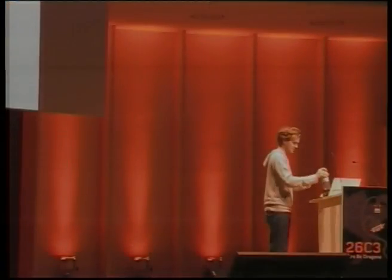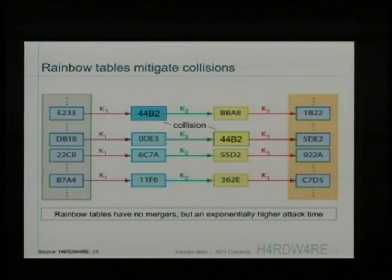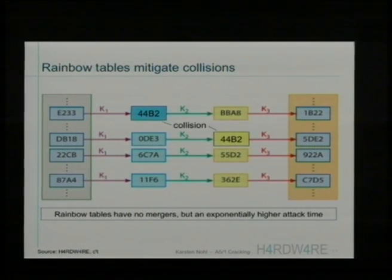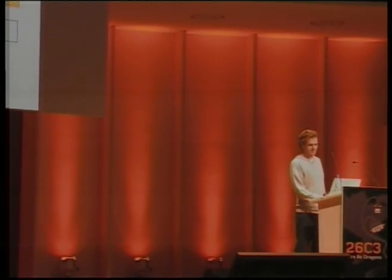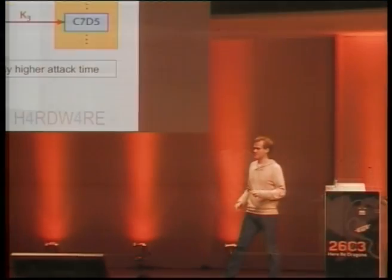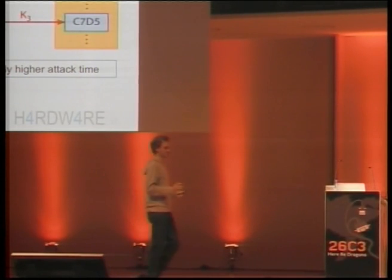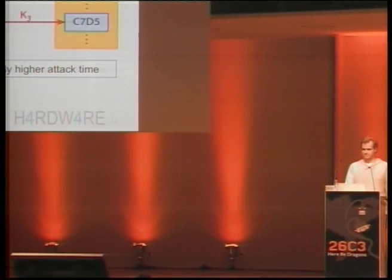Academics came up with a great idea to get around that problem: the rainbow table. In every step of the computation you apply a slightly different function — still a type of A5/1 function, but with a different constant XORed into the function. Since the different functions are like different colors of a rainbow, this is called a rainbow table. If you have a collision in a rainbow table, unless it happens in exactly the same column, the chains don't merge because the next computation will be different. This gets around the problem of merger through collisions, allowing you to compute much larger tables and achieve higher coverage with a smaller number of tables.